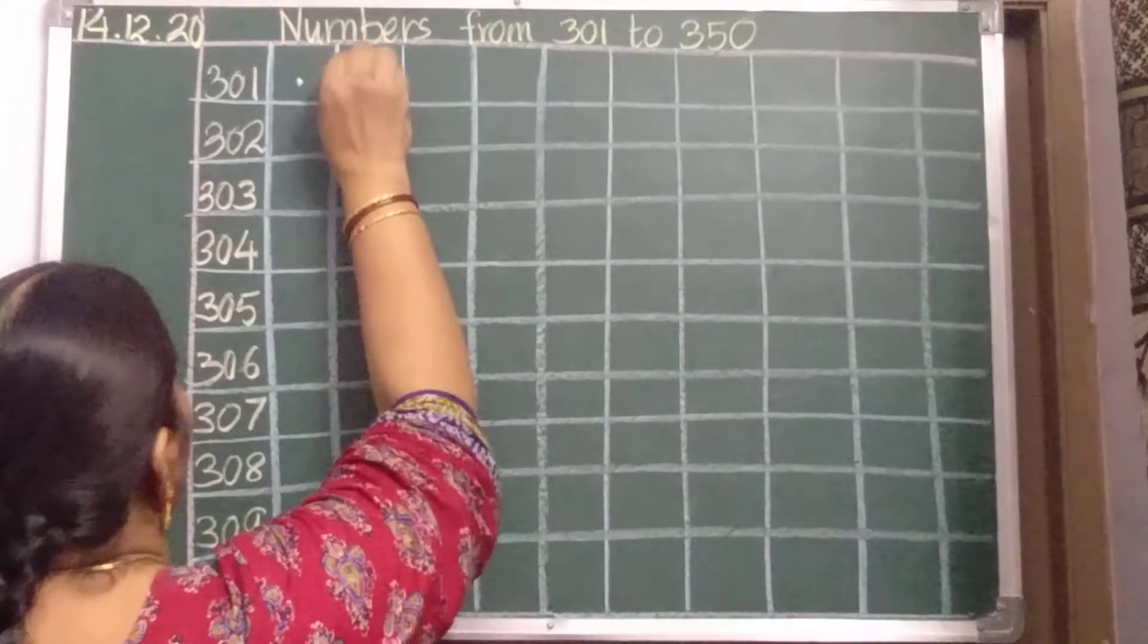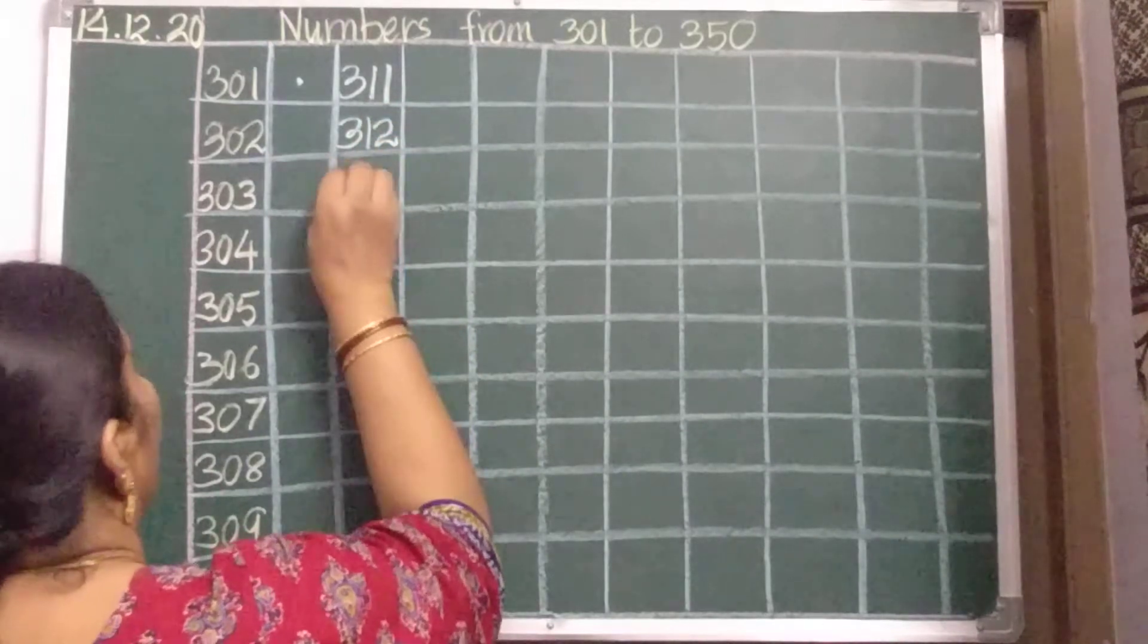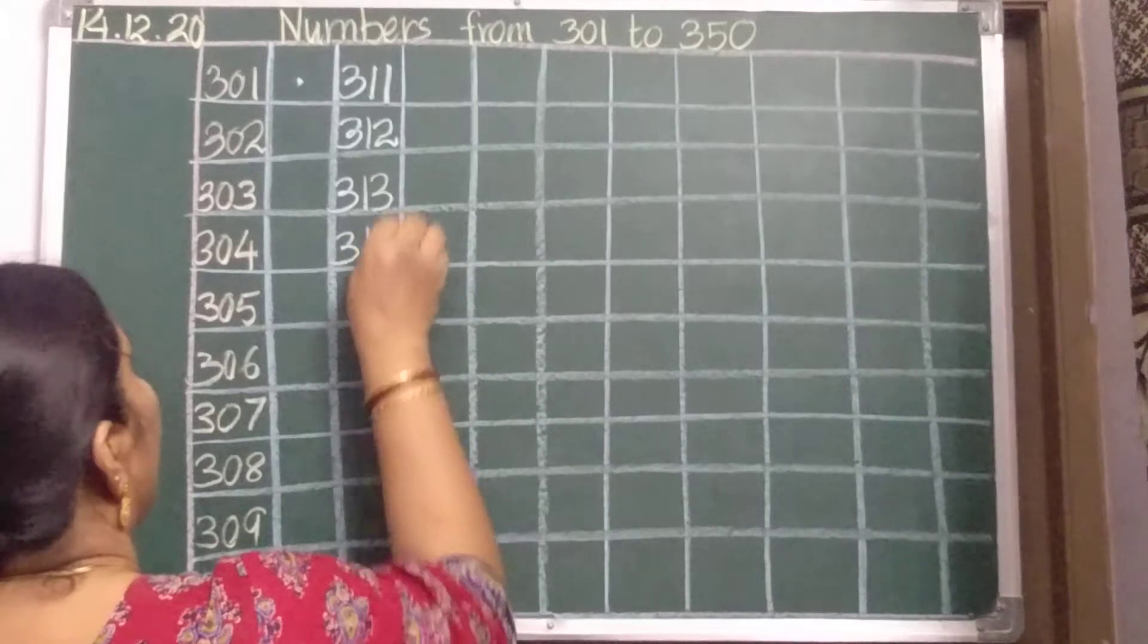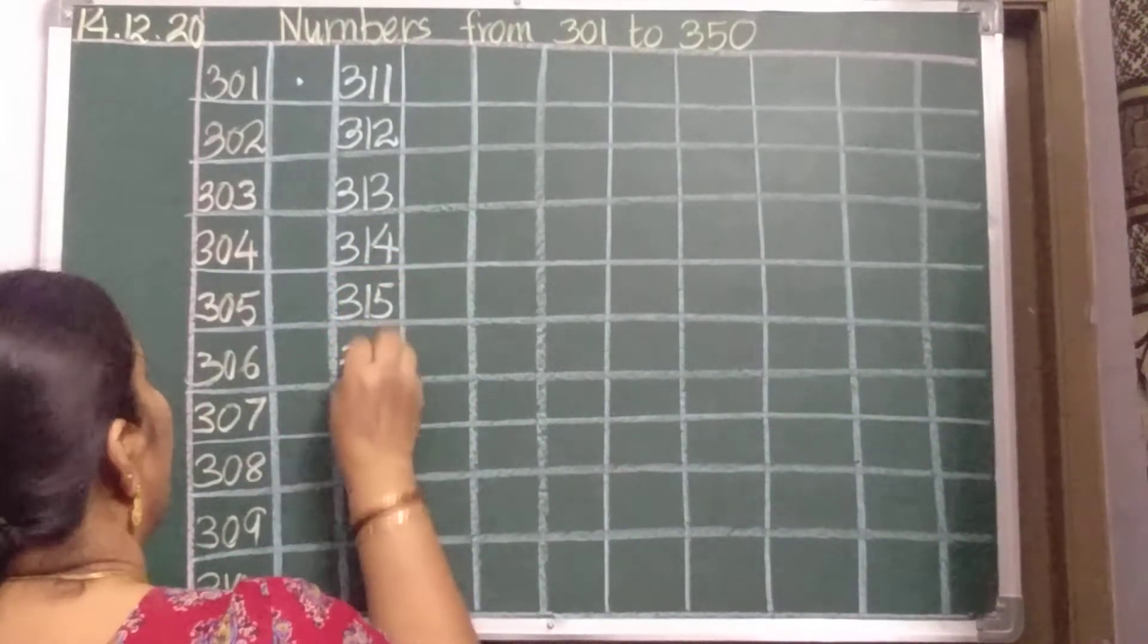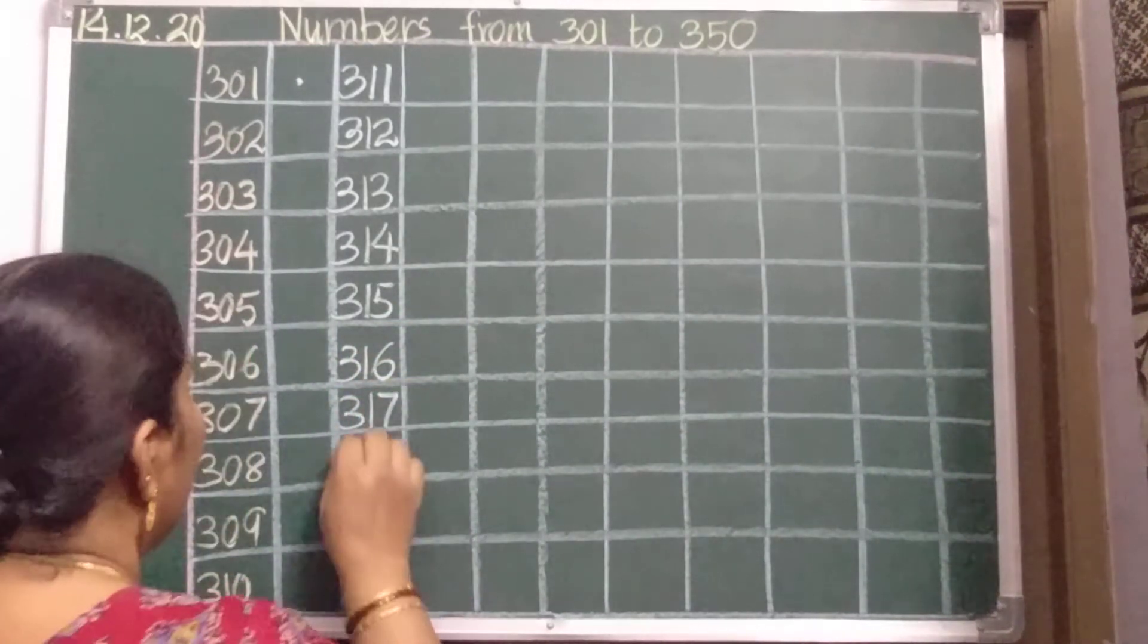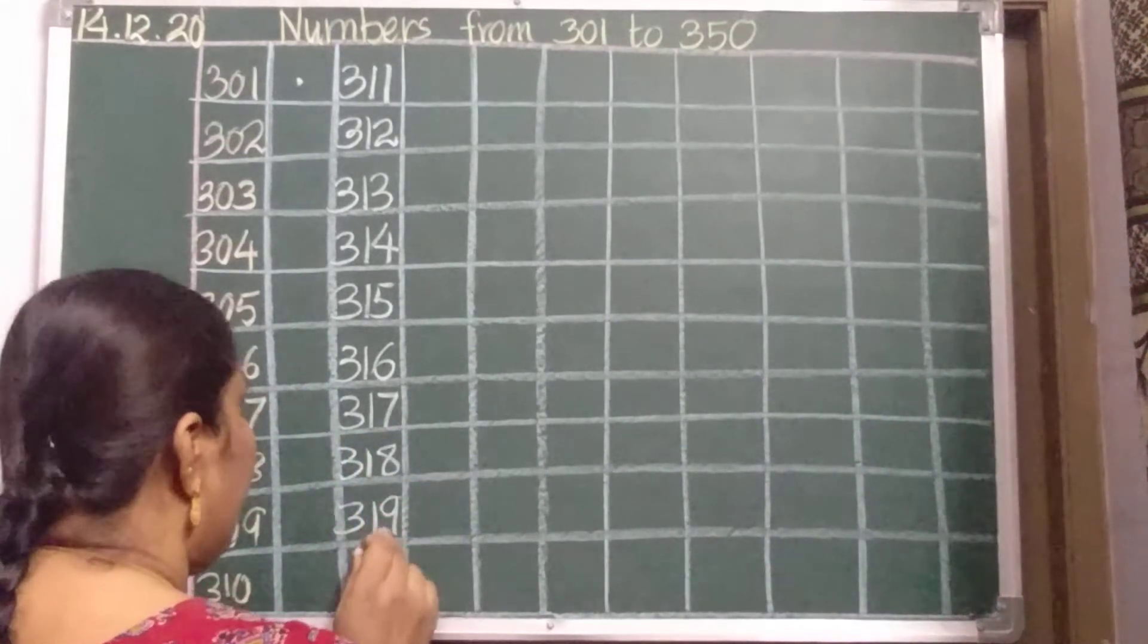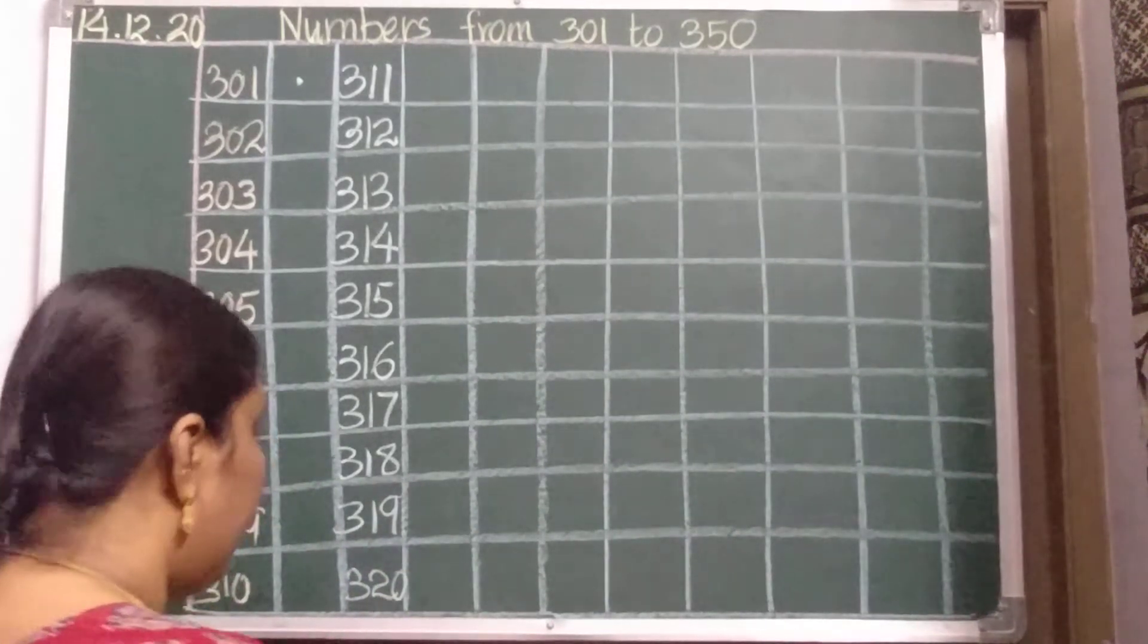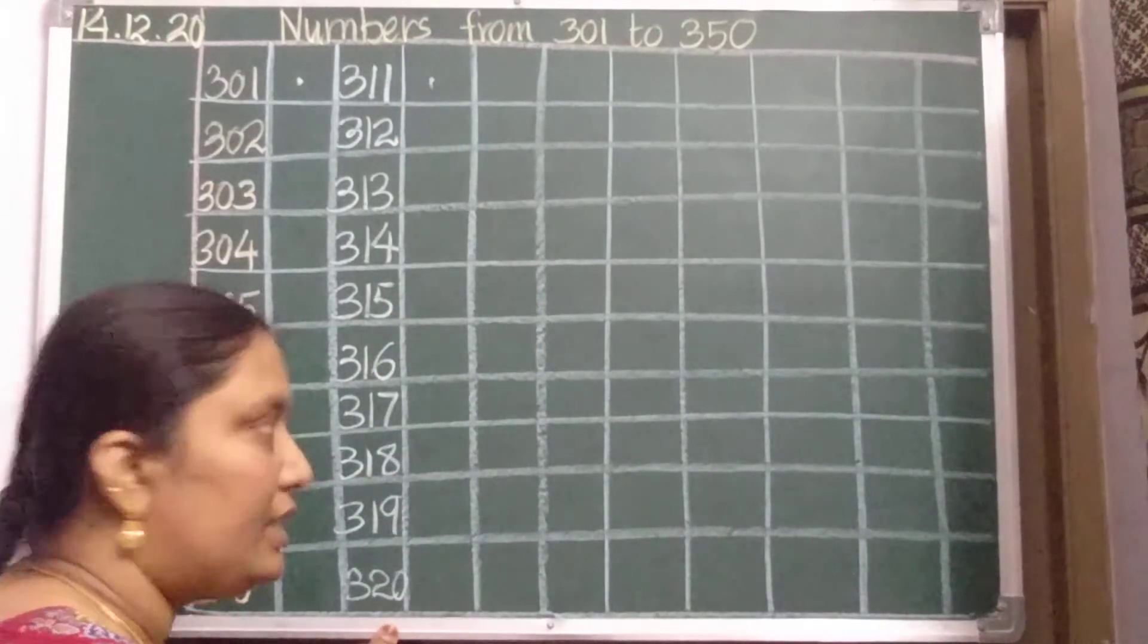10 after 11, yes. So, 311, 312, 313, 314, 315, 316, 317, 318, 319, and 19 after 20. Yes, 320. Put a dot, leave one line, 20 after 21.